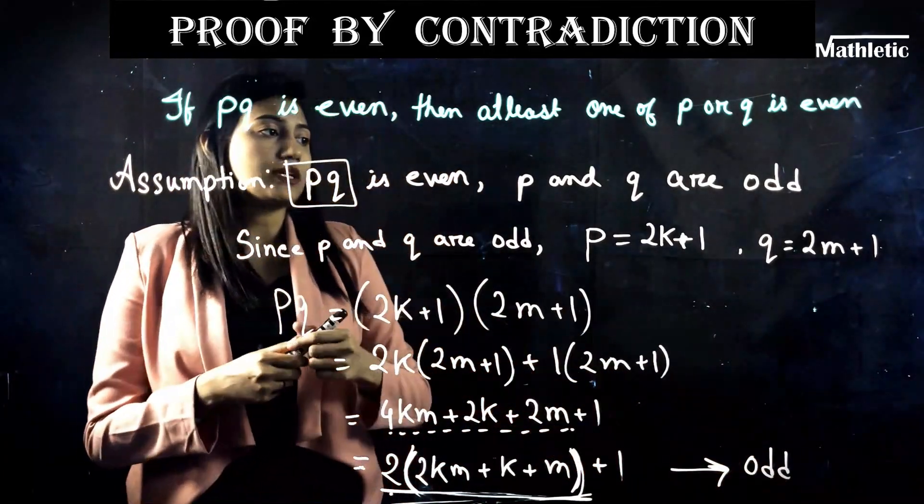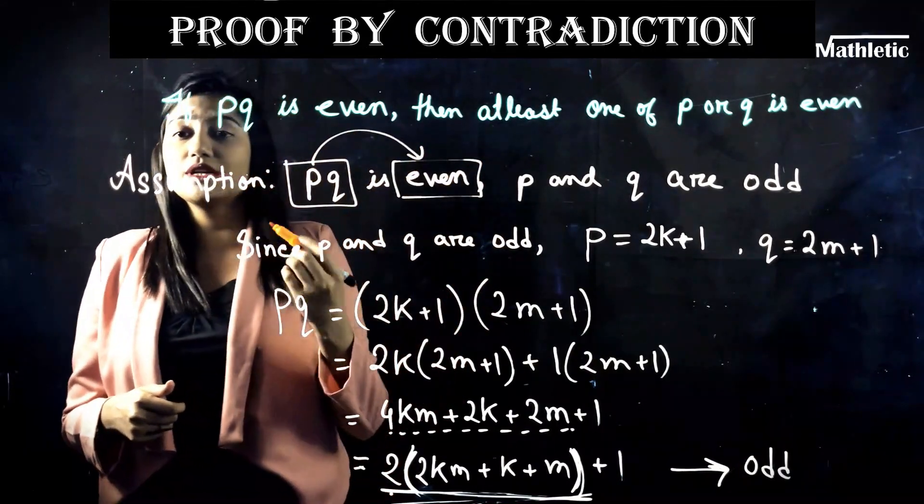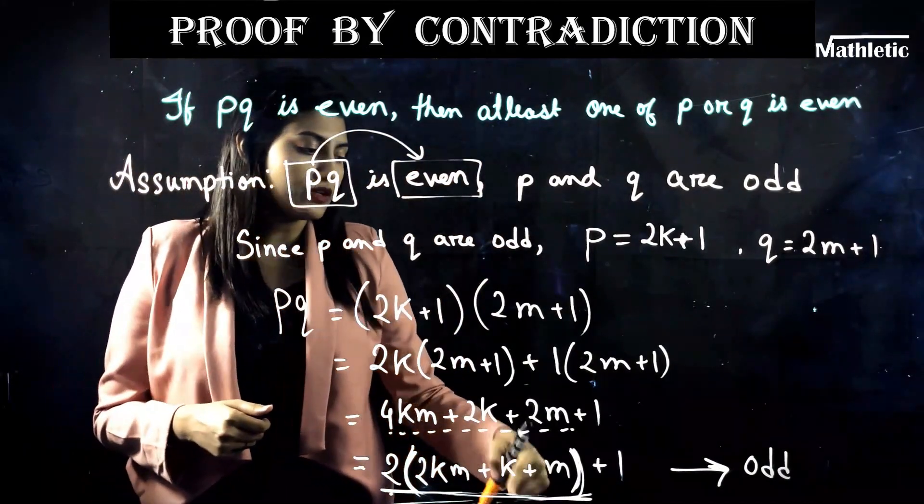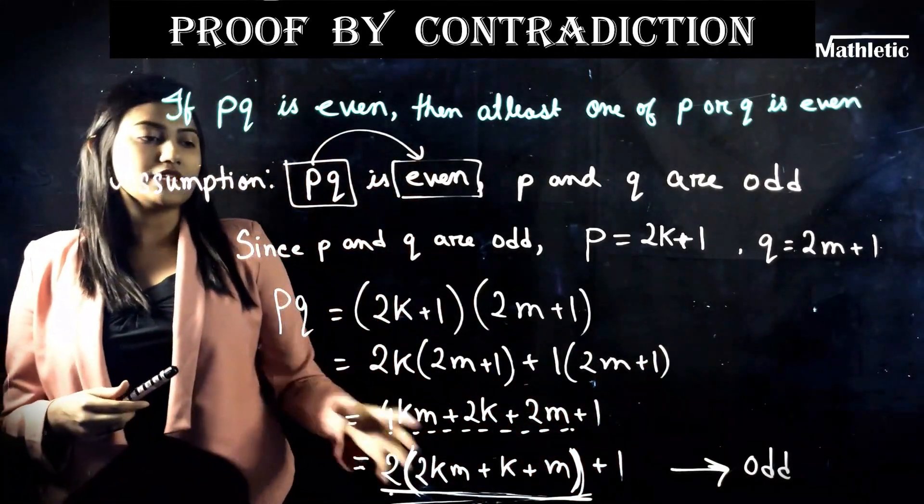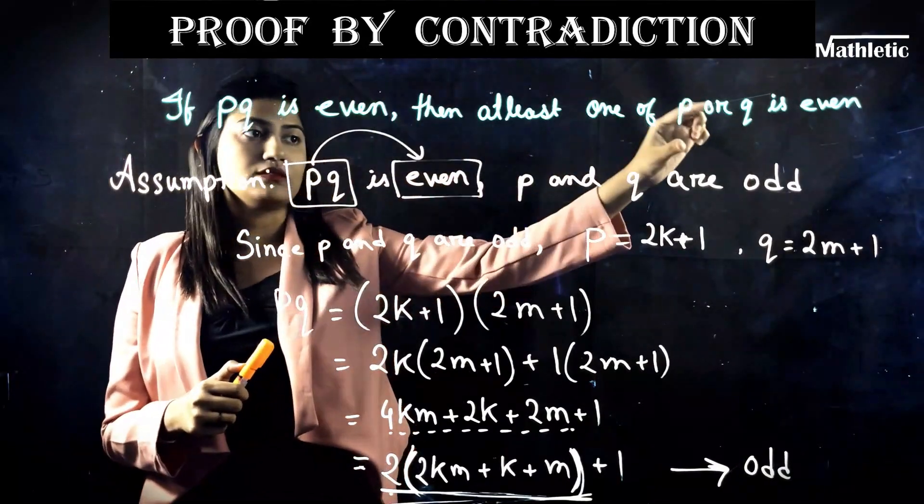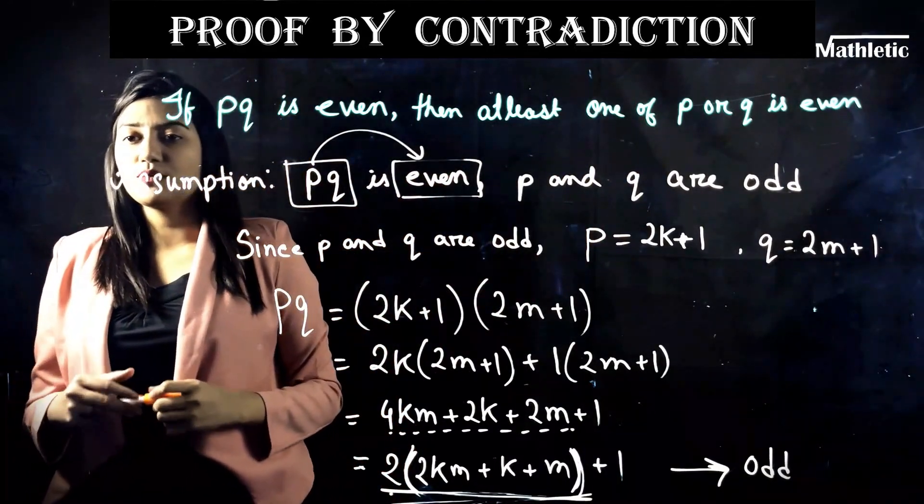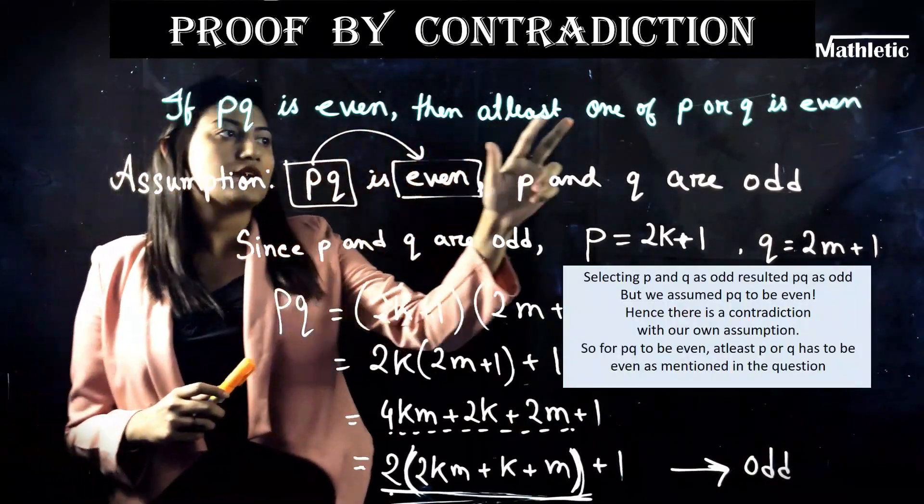Which contradicts with our initial assumption because we assumed pq to be an even value. Right? And eventually we got pq expression as an odd value which contradicts with our initial assumption, making the original statement correct. Right? The original statement given in the question is now correct because in the original expression pq is even when p or q is even.